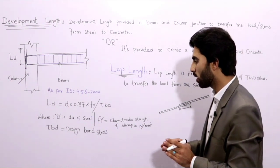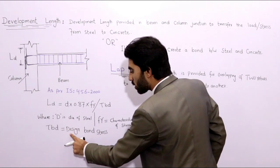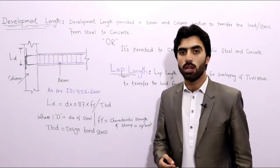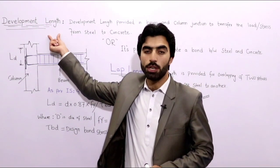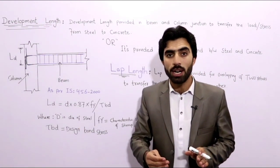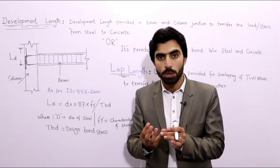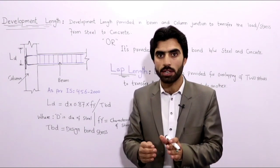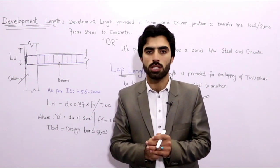Here τbd is the design bond stress. In the next lecture I will show how to calculate development length for beam, column, and slab. Remember, development length should be provided at the ends of the beam, column, and also in the slab — it must be provided because it is very important for structural stability.